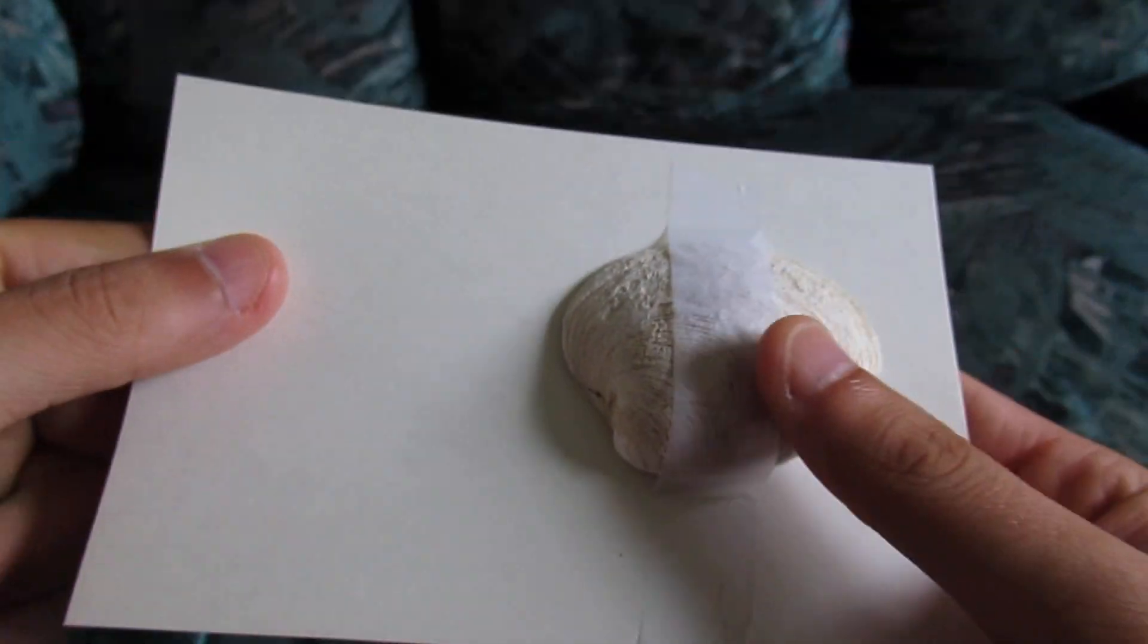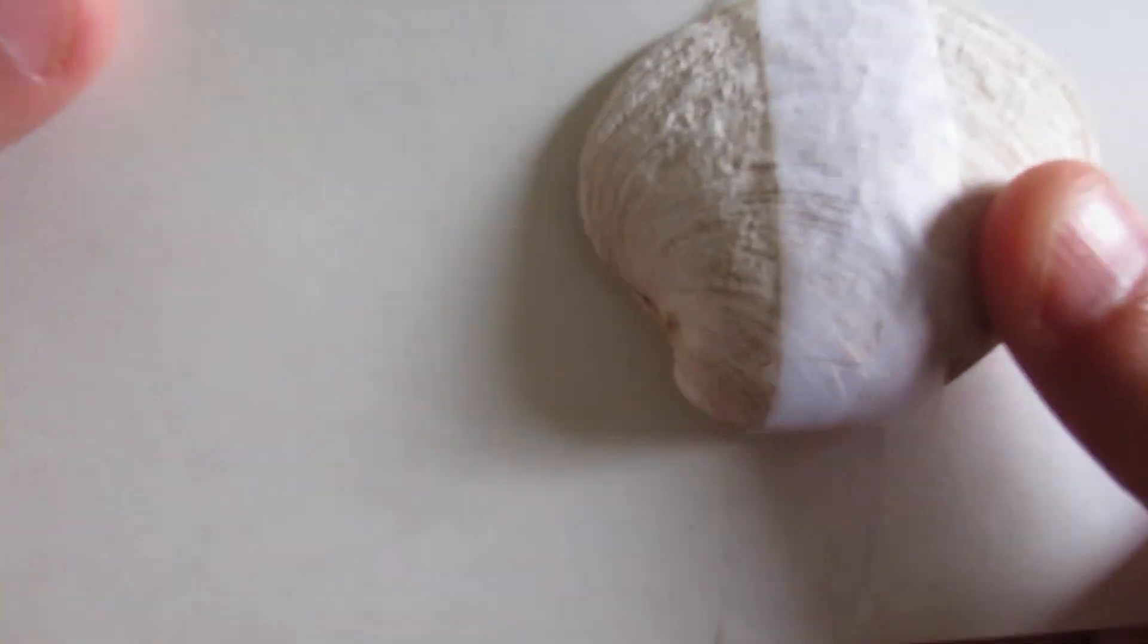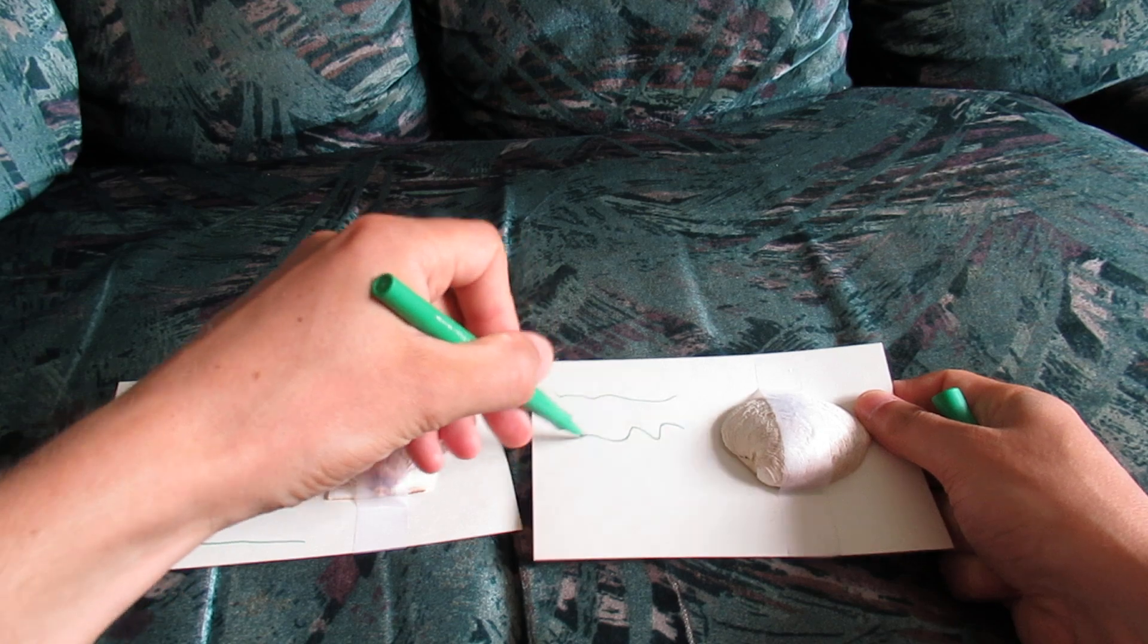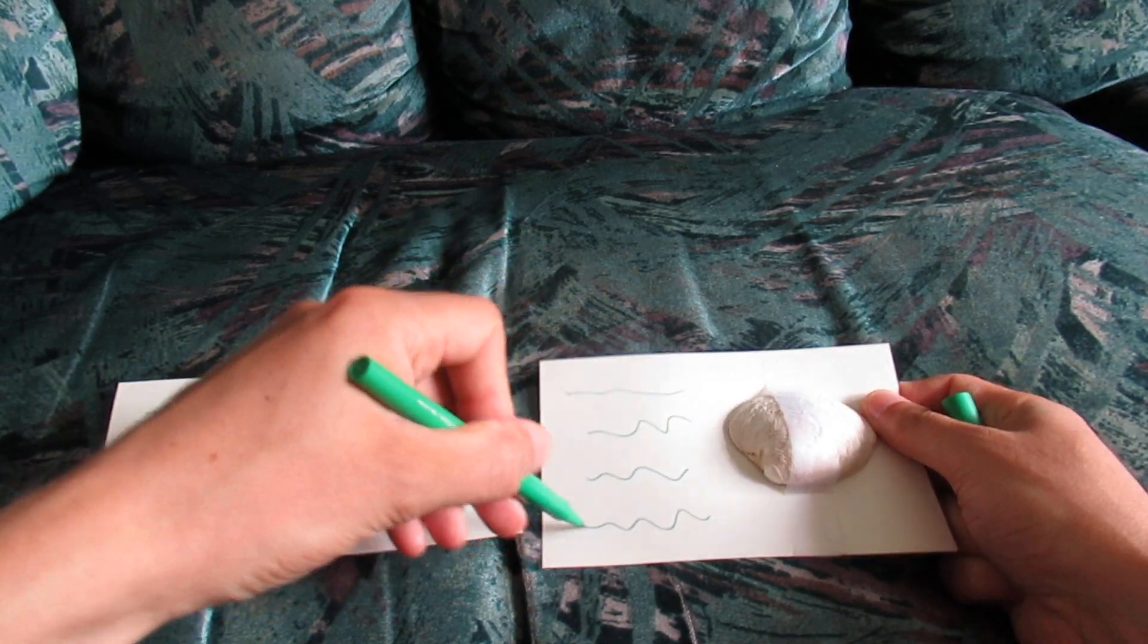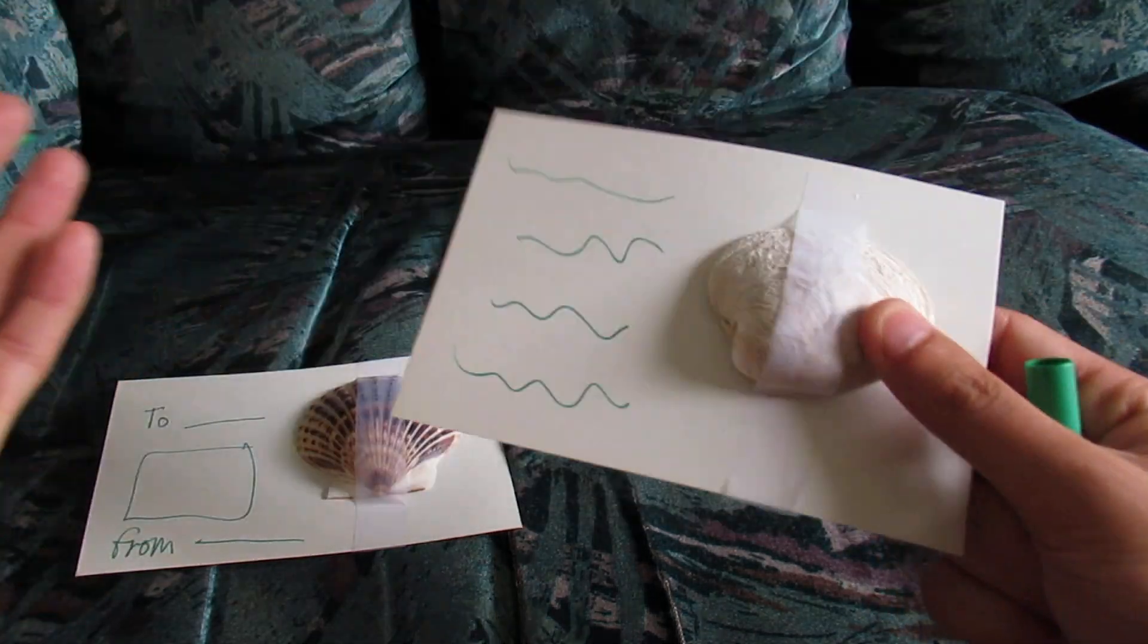So if they just want to take the seashell out, great. But this is presenting it in a way that gives you the opportunity to write a little something, especially the person's name and who it's from. And that's it. You write your message here. Here you go. I was thinking of you.